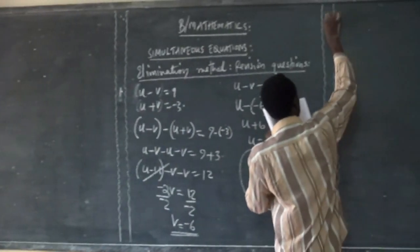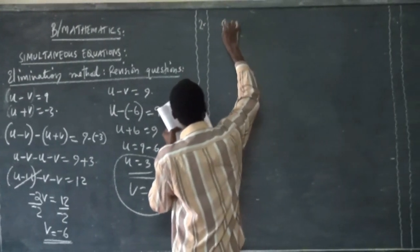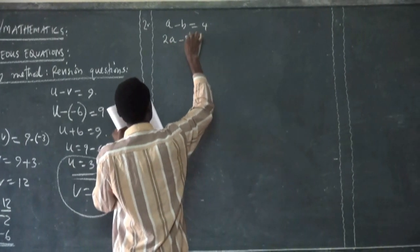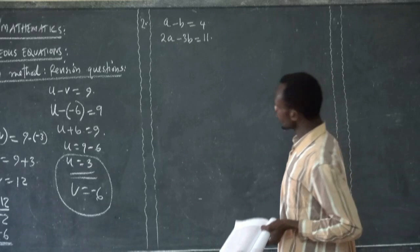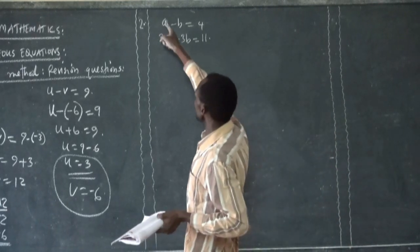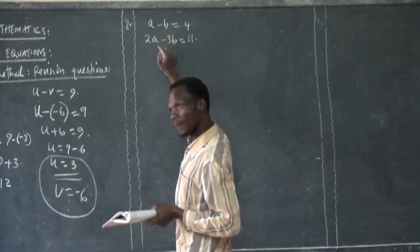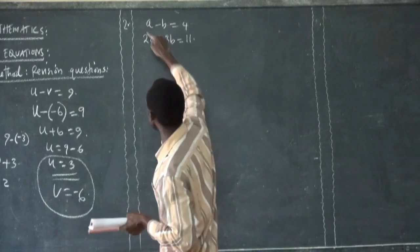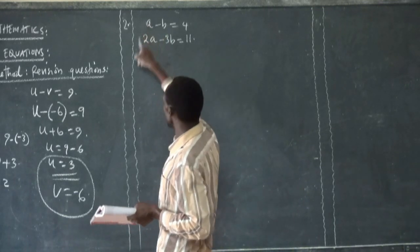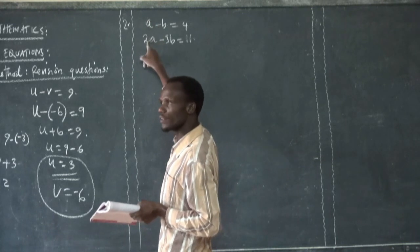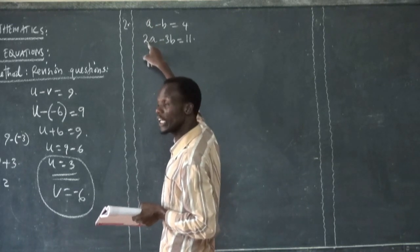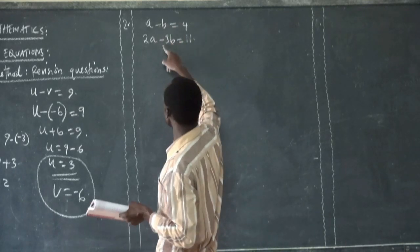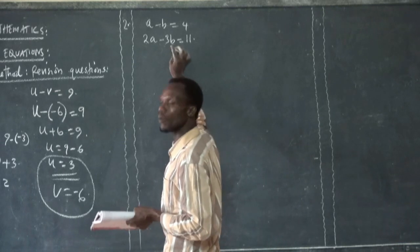The second question in the elimination method: A minus B is equal to 4, and 2A minus 3B is equal to 11. Looking at these equations, you won't find any letter with the same coefficient. Here the coefficient is 1A and here there is 2A — coefficients are not equal. Here we have negative 1B and here we have negative 3B — coefficients are not equal.